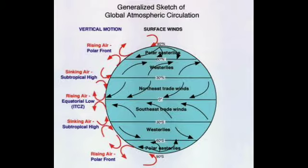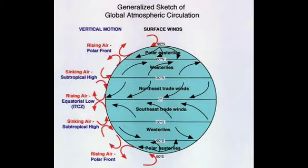There are marked variations in the horizontal and vertical distribution of temperature of the oceans. The temperatures are higher at the equator than at the poles. Thus, in the equatorial region, the density of water decreases due to high temperature and more rainfall. As a result, the lighter water from the equatorial region moves towards the colder and denser waters of the polar areas.